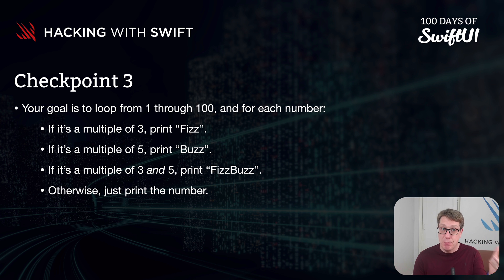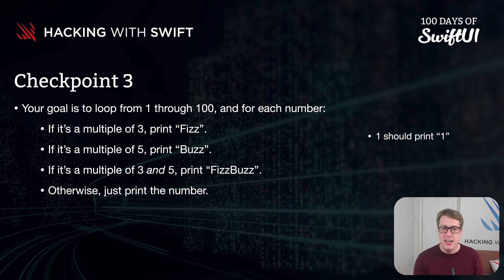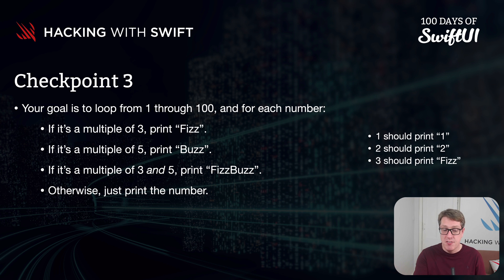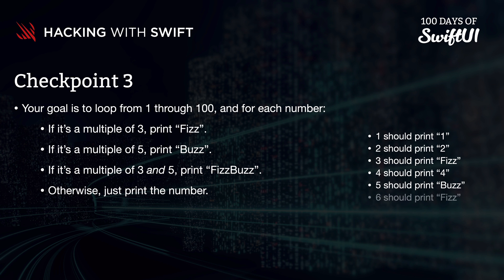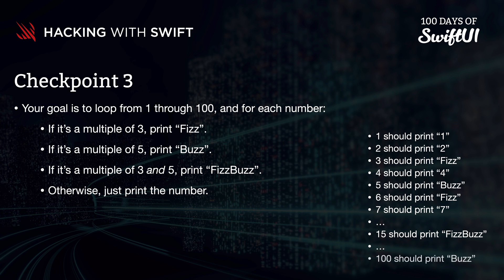I'm going to give you some sample output so you can see what I actually mean. If we pass 1 into our loop, it should print 1 — it's not a multiple of 3 or 5. Pass in 2, we'll get 2. Pass in 3 — 3 is a multiple of 3 — we should print Fizz. 4 should print 4, but 5 should print Buzz, it's a multiple of 5. Then we have 6, we should print Fizz. 7 will print 7. Skipping ahead, 15 should print FizzBuzz as a multiple of 3 and 5. And finally, 100 should print Buzz.